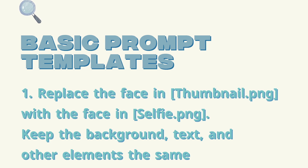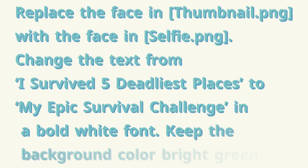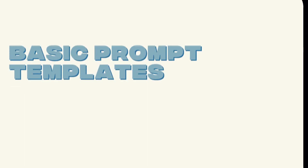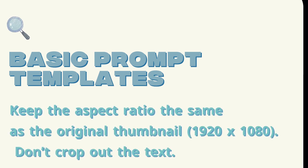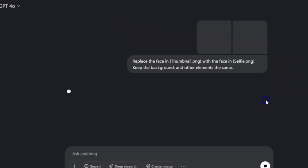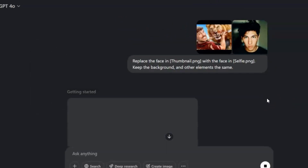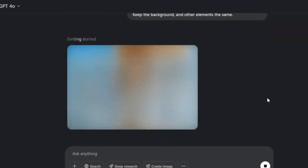If you want to change the background color or tweak the text, mention that in the prompt too. For example: 'Replace the face in the thumbnail with the face in the selfie. Change the text to my epic survival challenge in a bold white font. Keep the background color bright green.' If the first result comes back in the wrong size or text gets cut off, instruct the AI to keep the aspect ratio the same as the original thumbnail — 1920 by 1080 — and don't crop out the text. After you hit enter, the AI analyzes both images and figures out the best way to merge them.